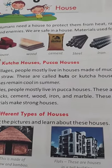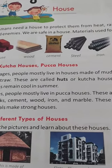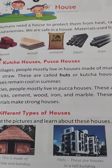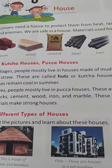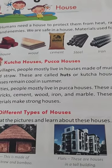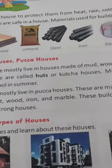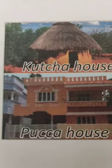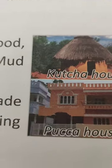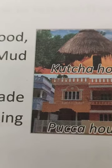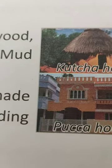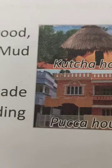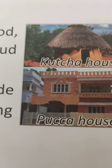There are two types of houses: Kaccha house and Pakka house. In villages, many people live in houses made up of mud, wood and straw. You can see in the diagram it is made up of mud, straw and wood. These are called huts or Kaccha houses. Mud houses remain cool in the summer.